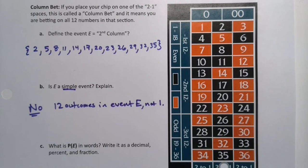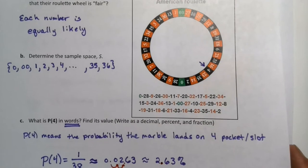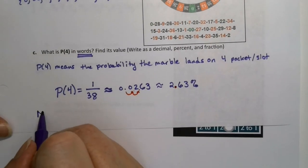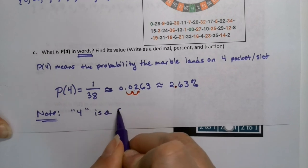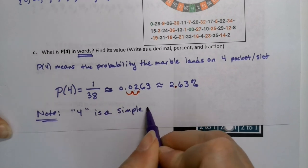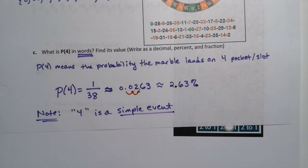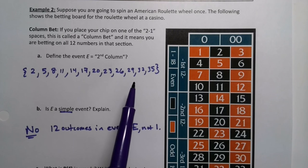In case you're interested, for the one we had on the previous page, this is a simple event. So you can make a note. Because there's only one way you could have 4 be a winner, which is it lands on 4. That's it, that's the only way to win. Whereas here, it could land on any one of these numbers and you win.